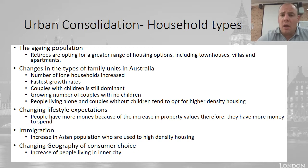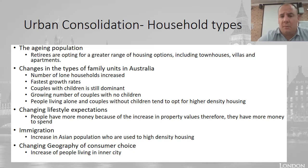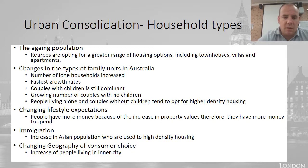People want smaller houses and don't want a big block of land — they'll have more rooms inside like a kids' playroom, so blocks of land have decreased. Urban consolidation has helped those types of people. We've also had a lot more immigration, particularly from Asian populations who are used to living in high density housing, which has helped make urban consolidation in places like Sydney successful. People also want to be able to live in inner cities and don't really want to keep moving out to the suburbs.